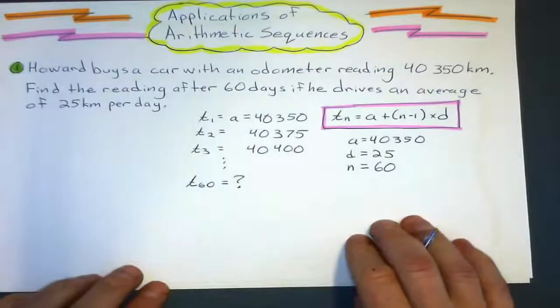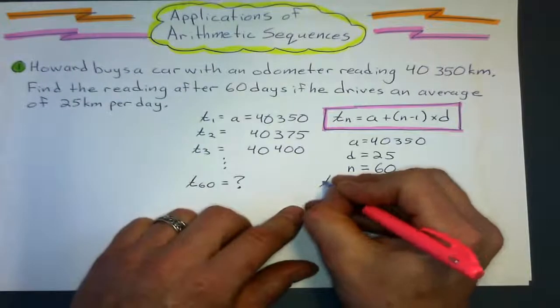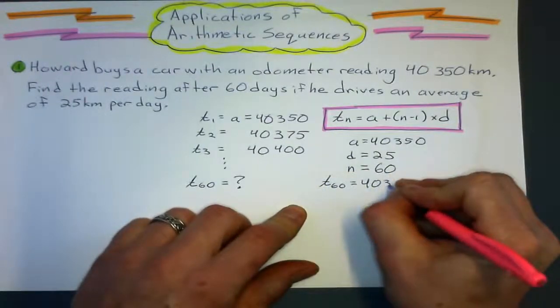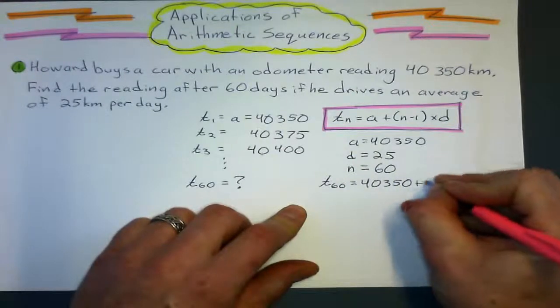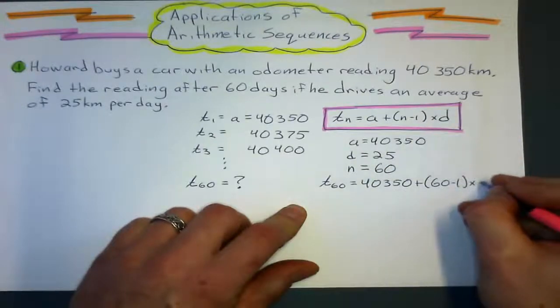Alright, so this just turns into a matter of substitution. The 60th term is going to be 40,350 plus 60 minus 1 times my common difference, which is 25.